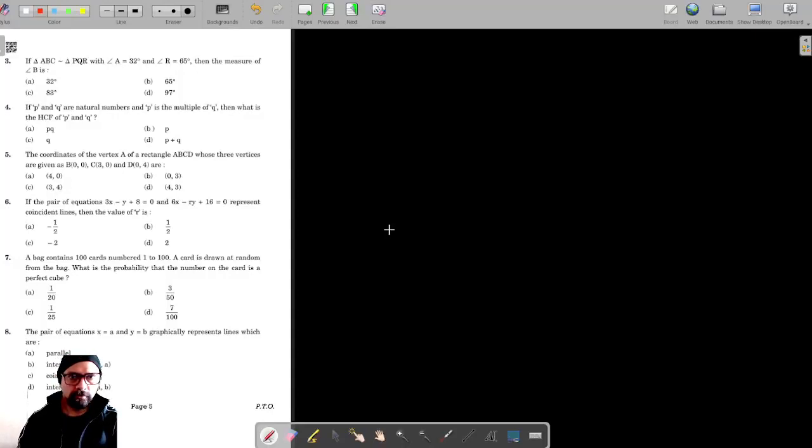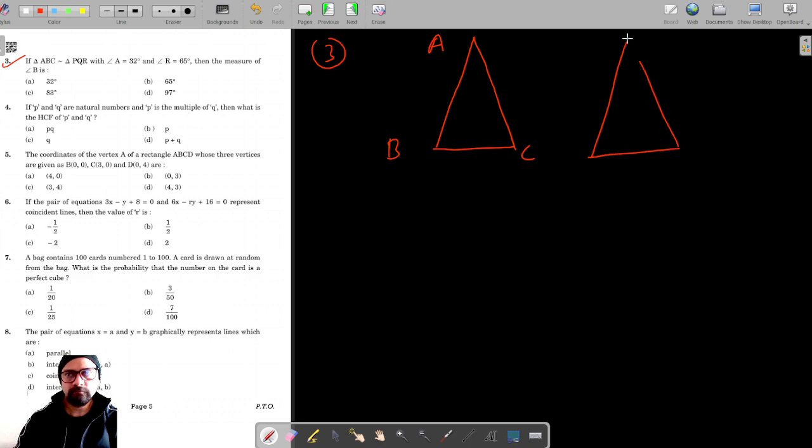For question number 3, it's given that triangle ABC is similar to triangle PQR. This is triangle ABC and this is triangle PQR.